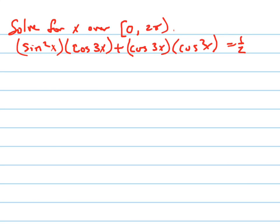Let's solve for x over the interval from 0 to 2π, including 0. For this problem, it looks really complicated, but if you look carefully, those two terms have a cosine 3x. When I factor out a cosine 3x, I get left with sine squared x plus cosine squared x.